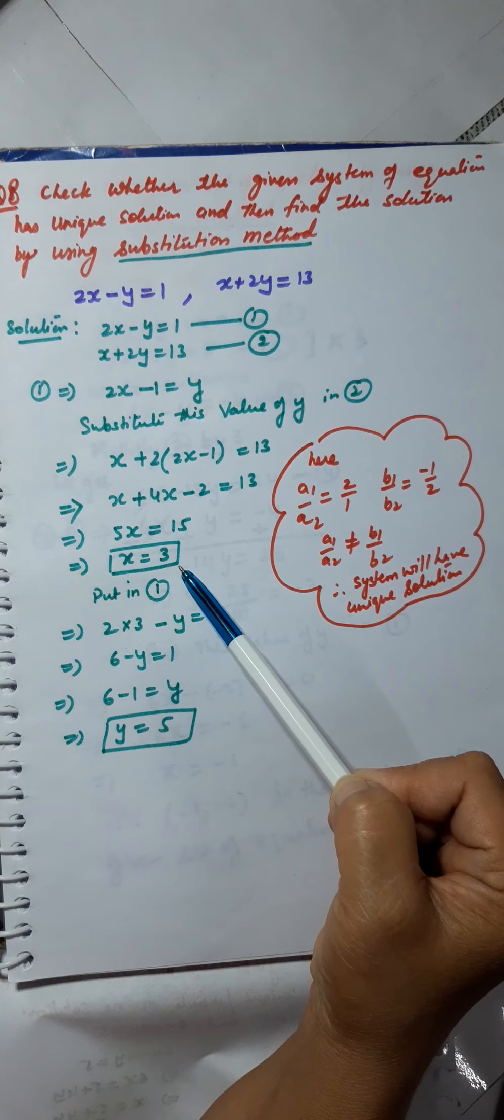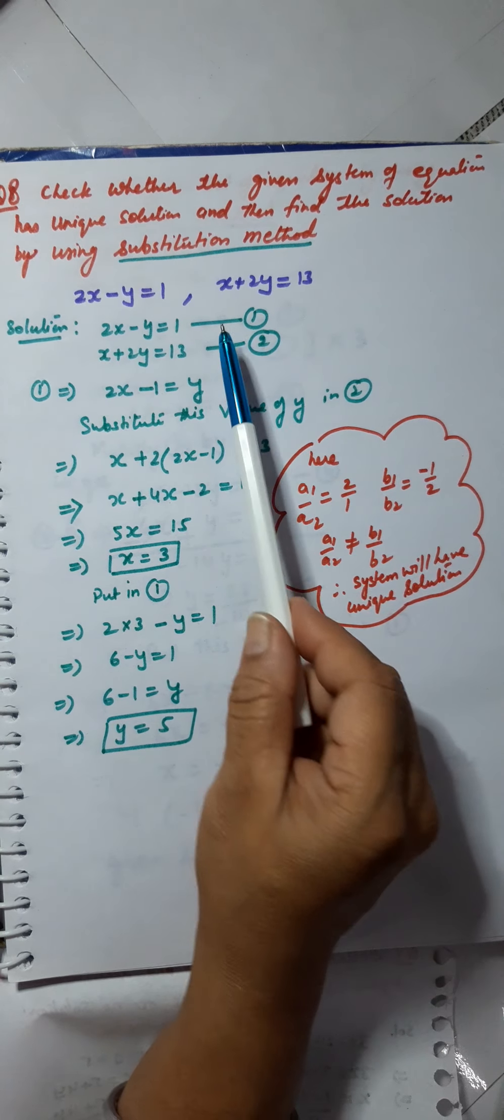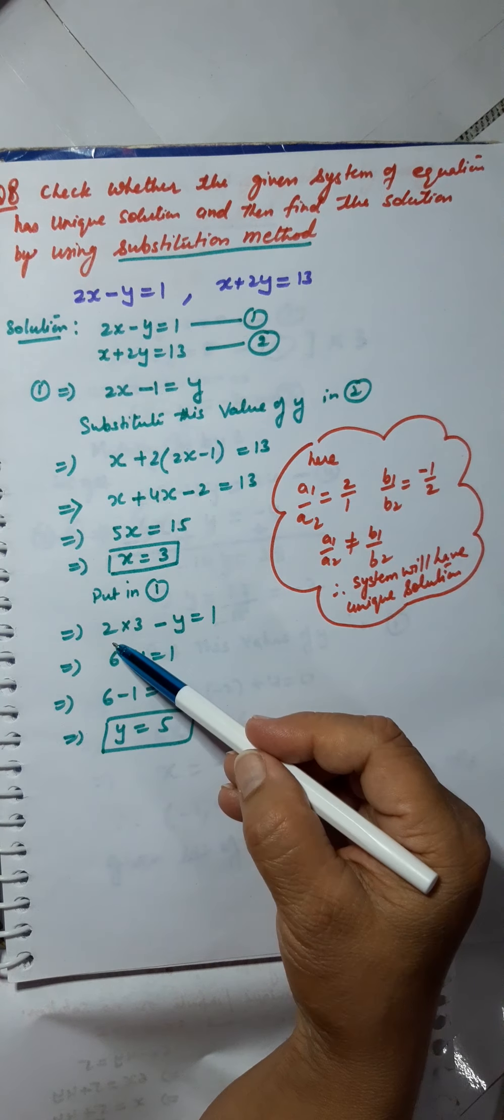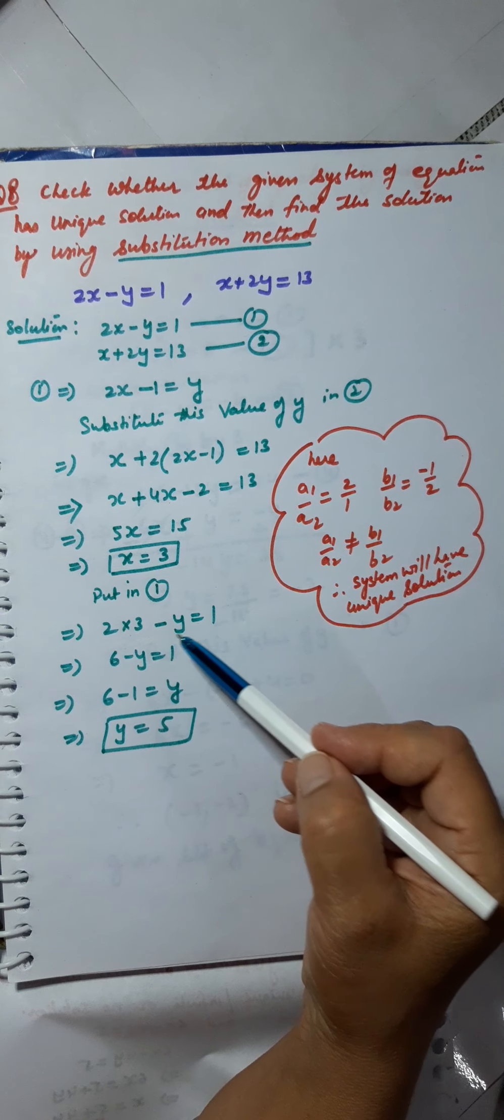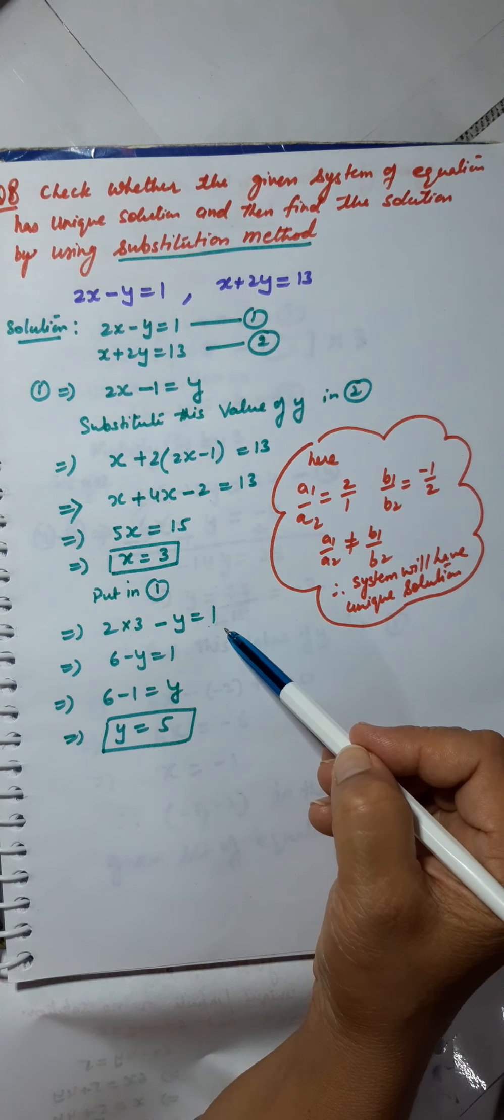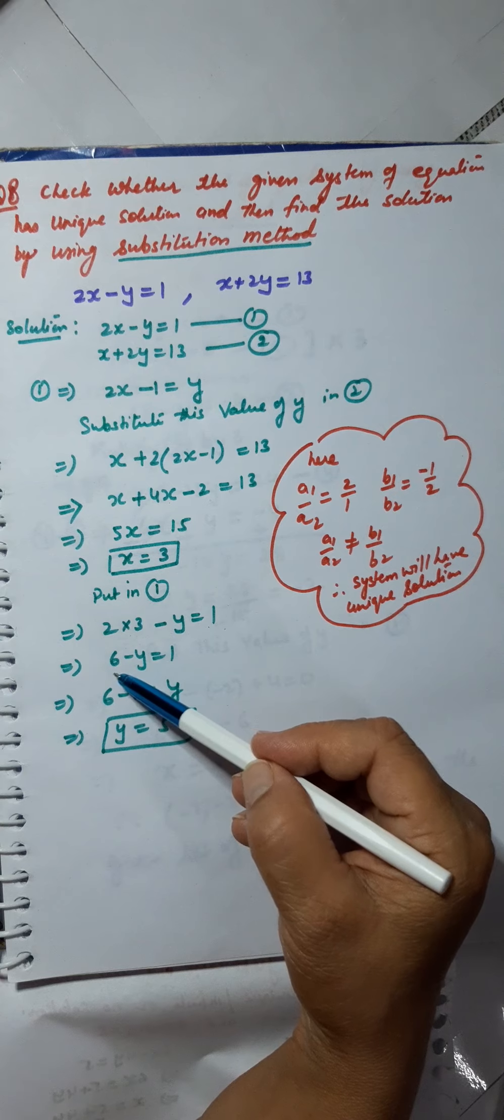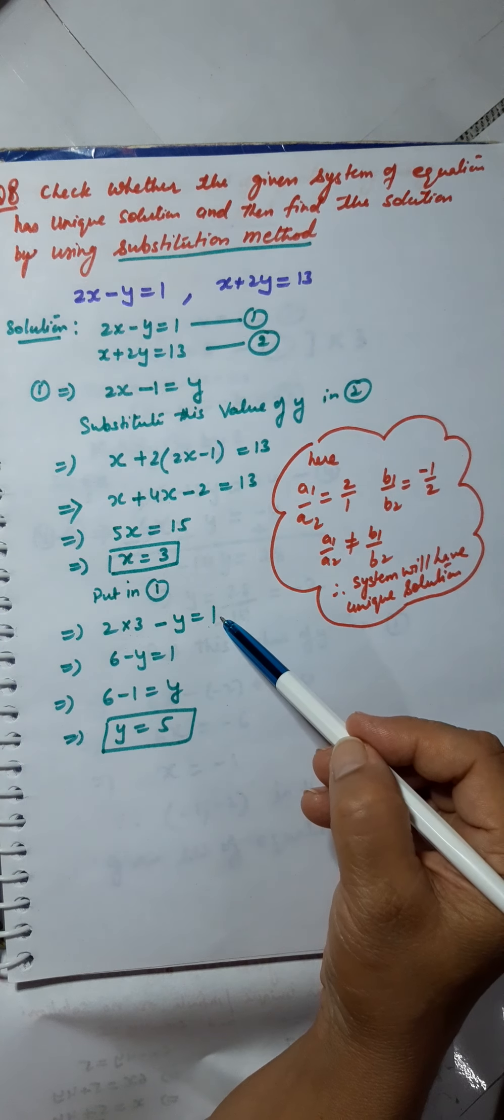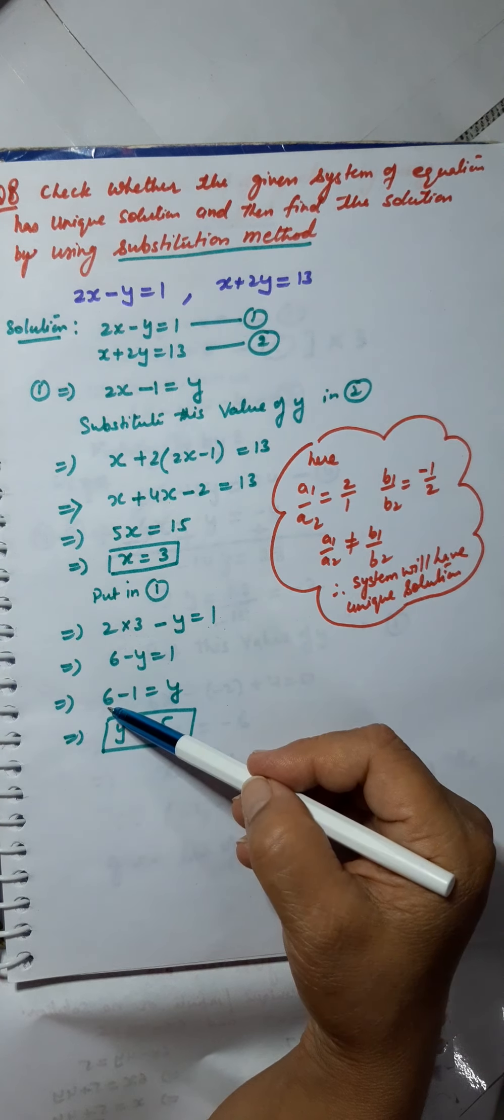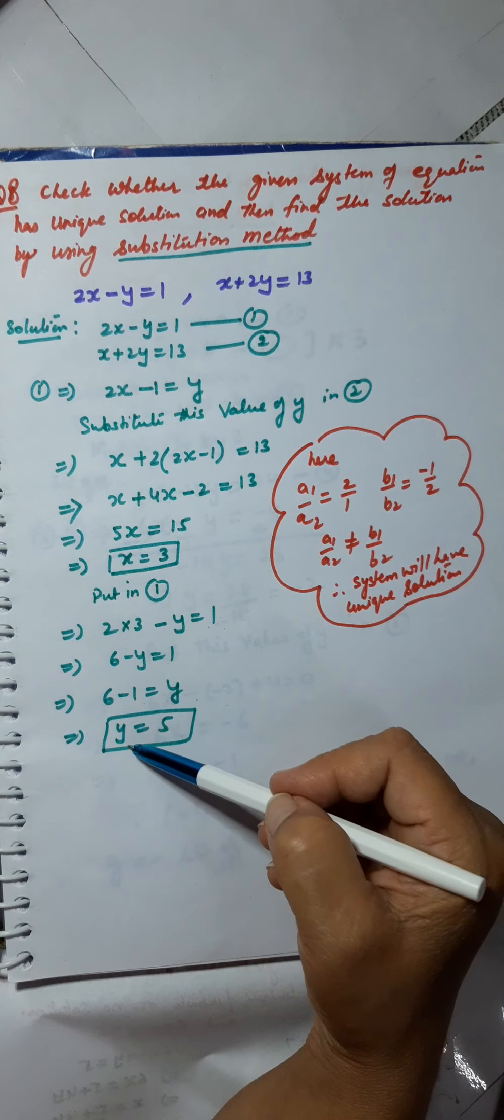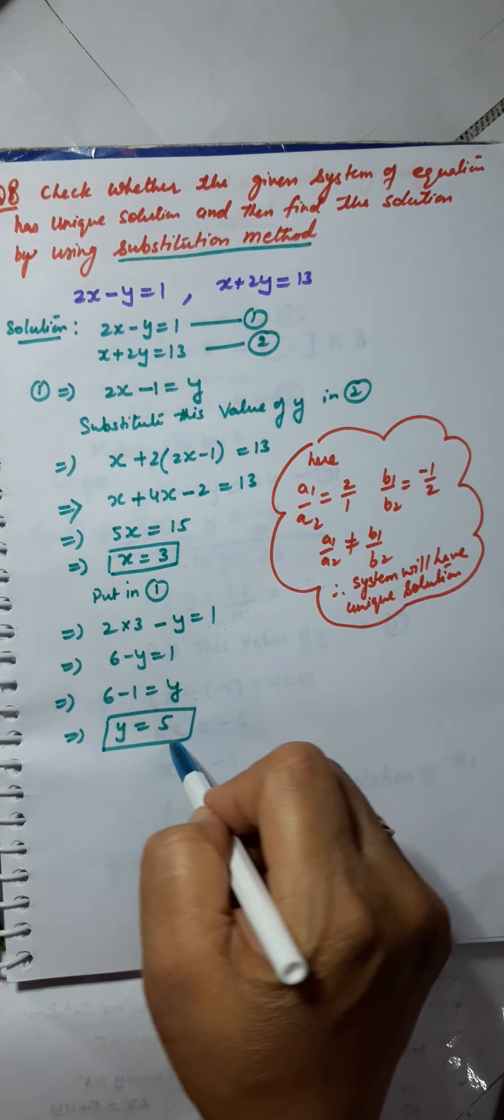Now, substitute this value of x in equation number 1. So this gives me 2 into 3 minus y equals 1, which implies 6 minus y equals 1, or 6 minus 1 equals y, which means y equals 5.